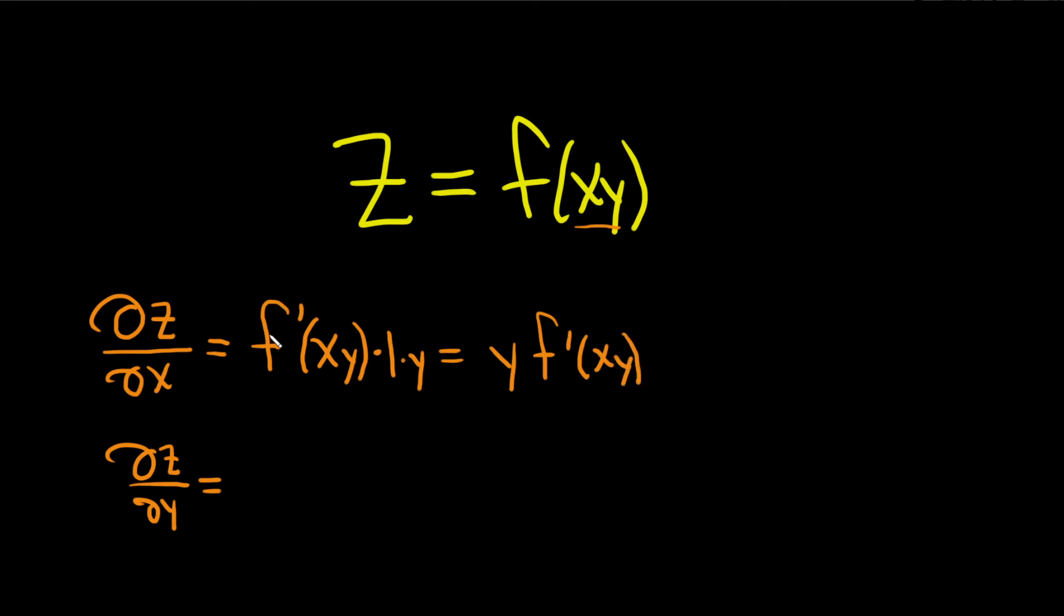Again, we took the derivative of the outside, we left the inside untouched and then multiply by the derivative of the inside. The derivative of x is 1, the y is a constant, so it just remains, so you just get this.